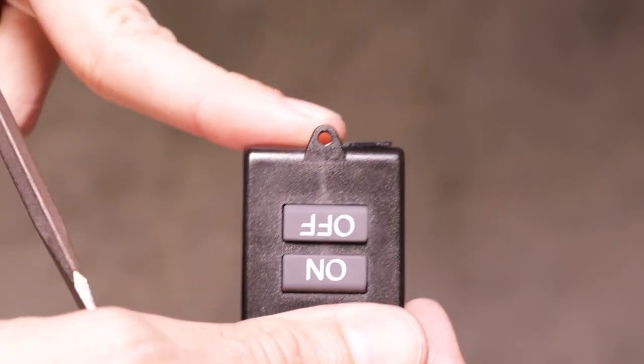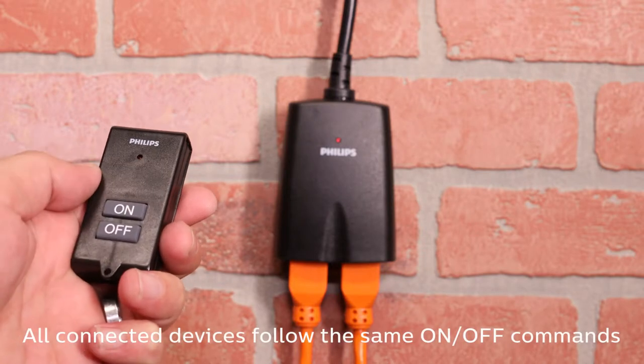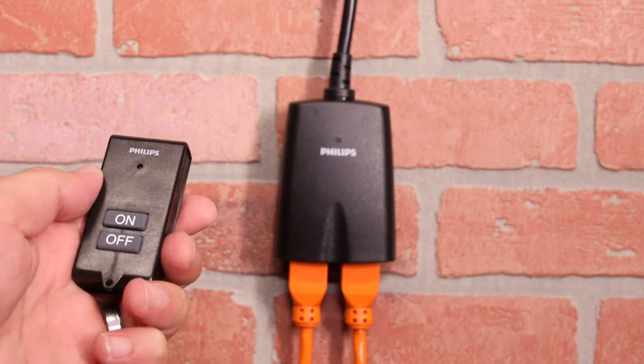Discard the plastic tab and replace the drawer. To turn on your device, press the on button until the indicator LED illuminates. Use the off button to shut down connected equipment.